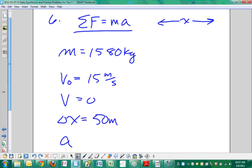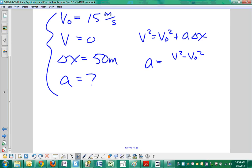We'll use the timeless equation: v² = v₀² + 2aΔx. Rearranging, we get acceleration equals v² minus v₀² over 2Δx.